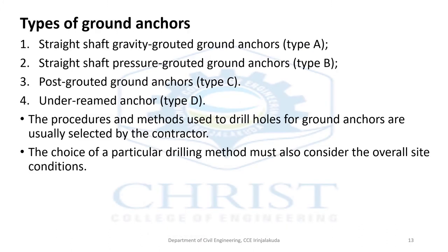There are four types of ground anchors used in the USA. The first is straight shaft gravity grouted ground anchors, known as Type A. The second is straight shaft pressure grouted ground anchors, known as Type B. The third is post grouted ground anchors. The fourth is under reamed anchors — similar to under reamed piles, which have a bulge-like formation at the end bearing zone that increases end bearing capacity.